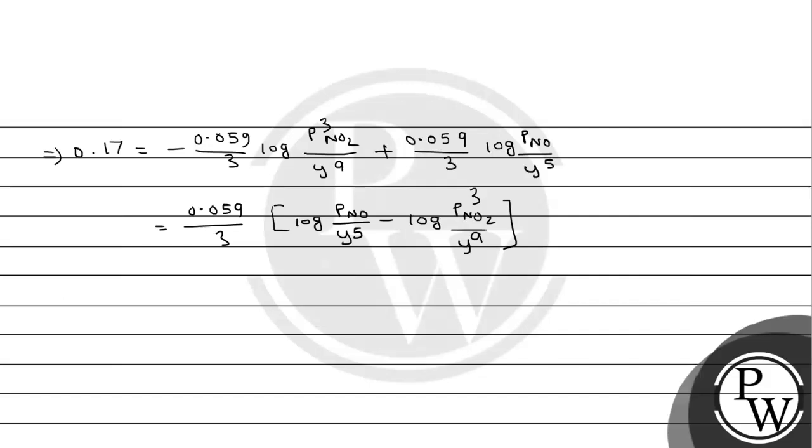So 0.17 equals 0.059 divided by 3 times log of (P NO divided by Y to the power 5) multiplied by (Y to the power 9 divided by P NO2 cube). Assuming P NO equals P NO2 equals 1 bar, we get 0.17 multiplied by 3 divided by 0.059 equals log of Y to the power 4 equals 8.644.